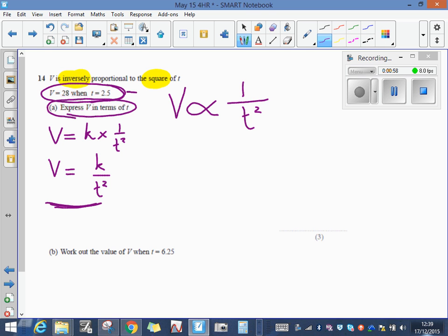So we substitute that into this equation. First of all, instead of V I'm going to write 28 equals k, and then t squared is 2.5 squared.